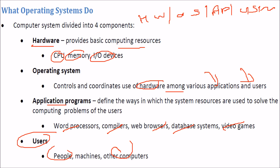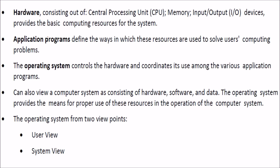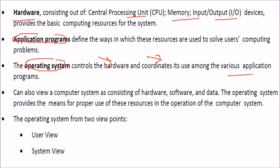Hardware is anything you can touch and feel — CPU, memory, input/output devices — providing the basic computing resources. Application programs solve your purpose. The operating system controls the hardware and coordinates all the various applications, since many applications may be running simultaneously. If you open Task Manager, you'll see various processes running that you didn't even start. The OS handles all that coordination and control.